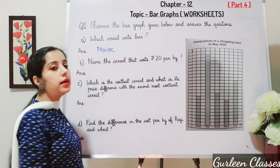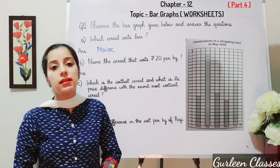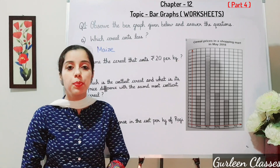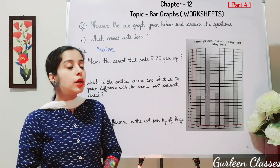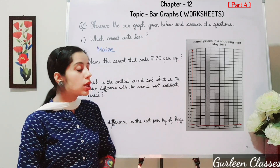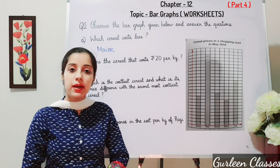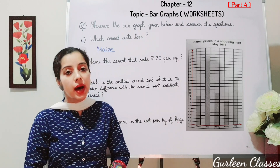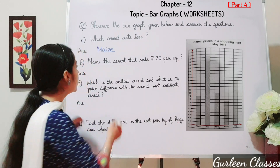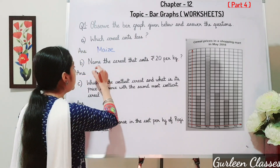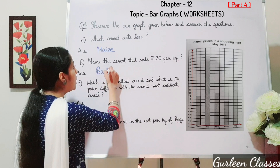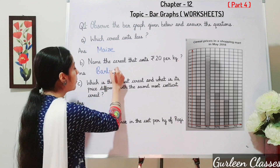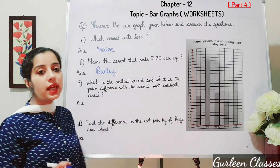Part B: name the cereal that costs rupees 20 per kg. Which cereal costs rupees 20 per kg? The answer is Barley.